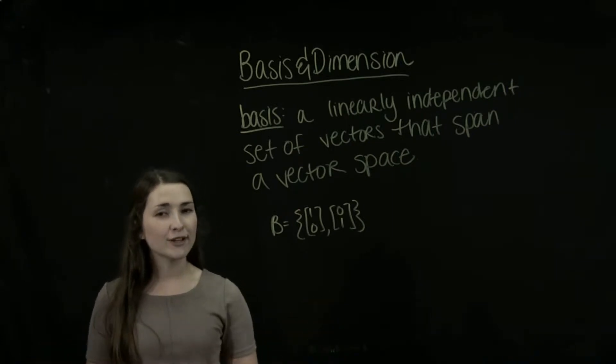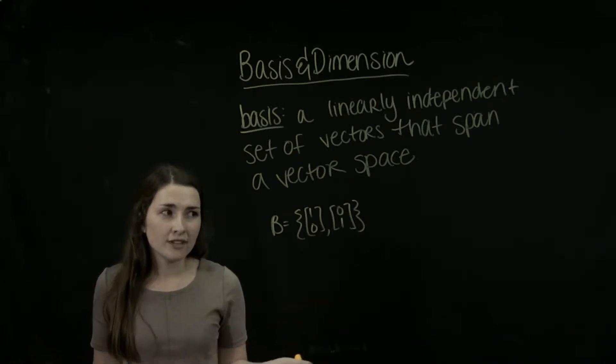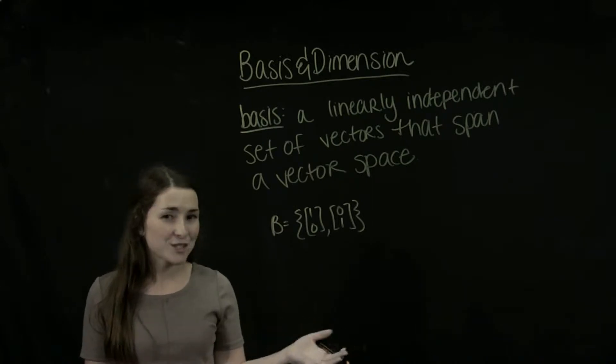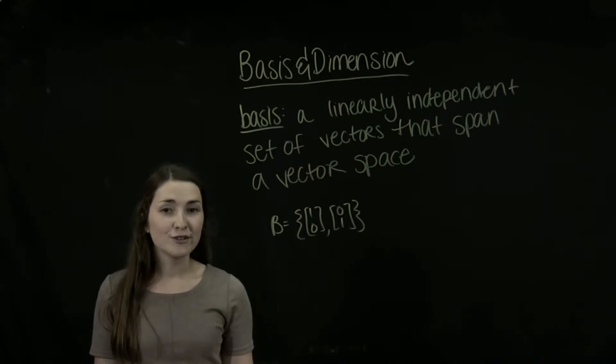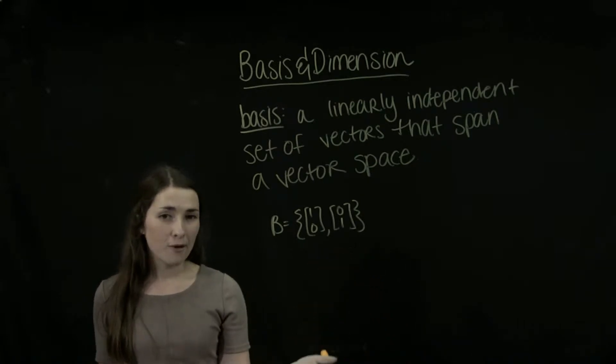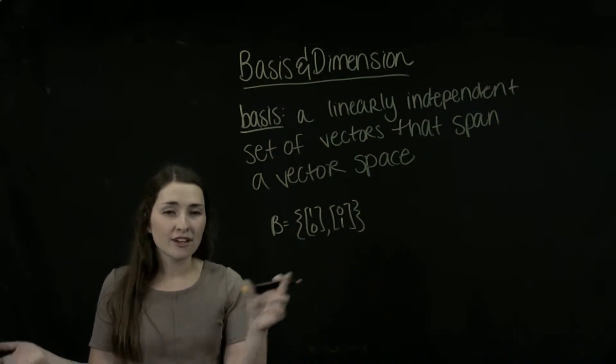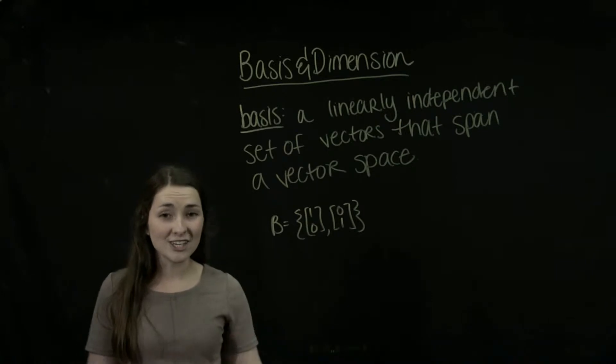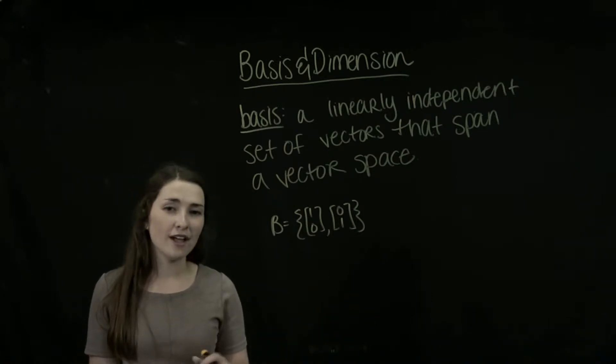Does it span the entire vector space of R2? Well, yeah, so if we wanted to get some vector x, y out, all we would have to do is multiply our first vector by x and our second vector by y. And we would find together that would form a linear combination that would give us our x, y. So yes, it does span the entire vector space.